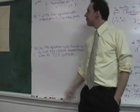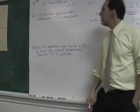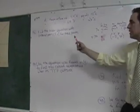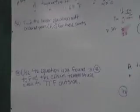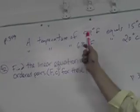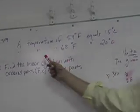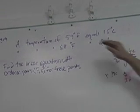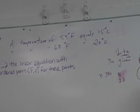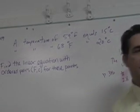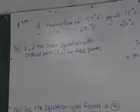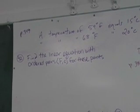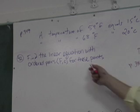This is page 349, numbers 42 and 43. It starts out by describing temperature in Fahrenheit and Celsius. A temperature of 59 degrees Fahrenheit equals 15 degrees Celsius, and 68 degrees Fahrenheit equals 20 degrees Celsius. The question asks: find the linear equation with ordered pairs F and C for these points.